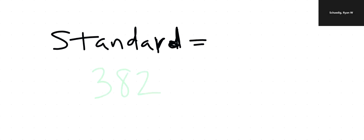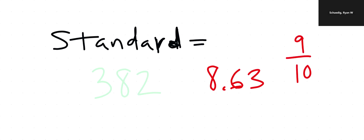When we're talking about standard form, remember that's just writing numbers as they are with numerals. So 382 — that's standard form. Eight and sixty-three hundredths — that's standard form. Even a fraction, nine-tenths — that's standard form. We're using these digits to show the numbers as they are. For now we'll just focus on this because this is what we're doing.